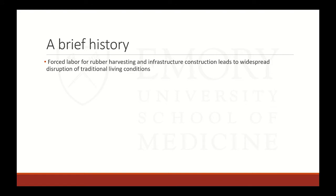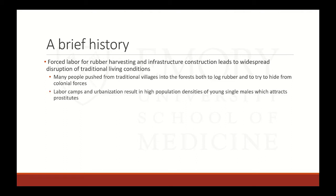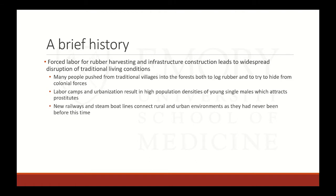In the 1890s, the price of rubber skyrocketed due to increased demand. The Congo Free State had huge natural supplies of rubber and switched its focus from ivory to rubber harvesting. Forced labor for rubber harvesting and infrastructure construction led to widespread disruption of traditional living conditions. Many people were forced from their traditional villages into forests to harvest rubber and hide from colonial forces.